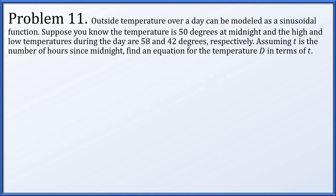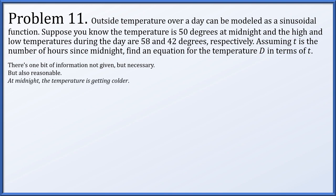Next up: the outside temperature over a day can be modeled as a sinusoidal function. The temperature is 50 degrees at midnight, and the high and low temperatures are 58 and 42 degrees. We assume a period of 24 hours, so 2 pi over omega equals 24, giving omega equals pi over 12. Also, at midnight the temperature is going down — the low typically occurs right before sunrise — so at midnight we're at the median and decreasing.